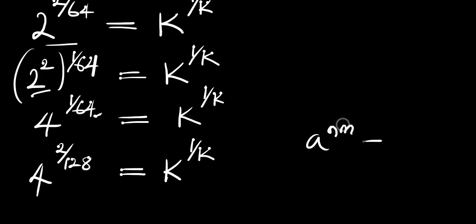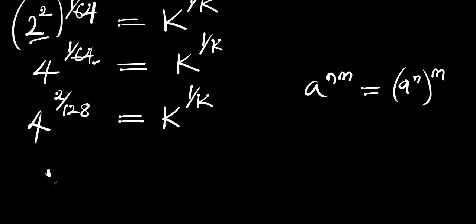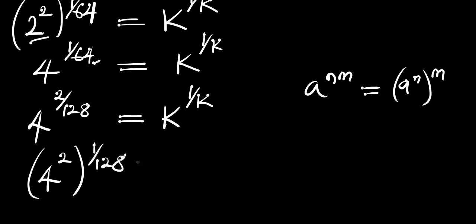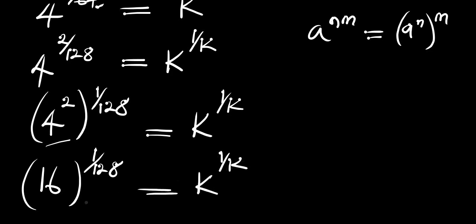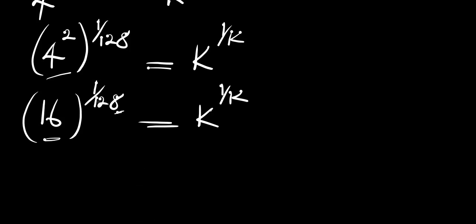In the same way, using the identity a raised to the power of n times m equals a raised to the power of n, all to the power of m, we are going to have 4 raised to the power of 2, all raised to the power of 1 over 128, and this equals k raised to the power of 1 over k. 4 raised to the power of 2 is 16, so we have 16 raised to the power of 1 divided by 128. Since the base here and what we have on the right are not the same, we still proceed. Instead of 1 over 128, we can write it as 16 raised to the power of 2 over 256.